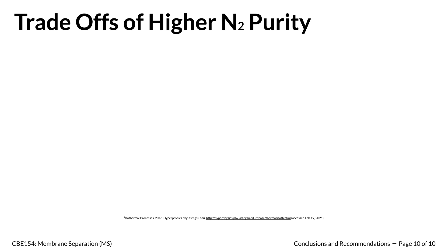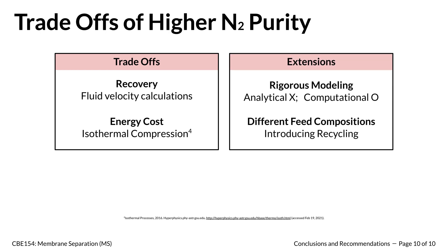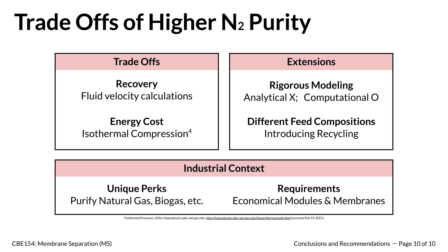Our experiment successfully determined the optimal operating conditions for the given membrane system. We learned that acquiring higher nitrogen gas purity has trade-offs, and sharper isolation in membrane separation requires greater input. While nitrogen purity increases with counter-current flow, decreased flow rates, and increased feed pressure, recovery rate decreases and energy cost increases. Looking forward, we recommend running additional experiments for different feed pressures and flow rates near the recommended operating conditions to test our model's assumptions. Implementing computational methods to simultaneously solve the non-simplified differential equations would allow a more rigorous model. We could also explore a recycling stream where the feed stream has a higher nitrogen concentration than 79%.